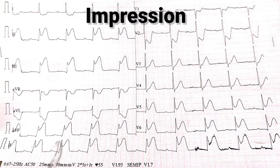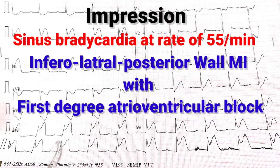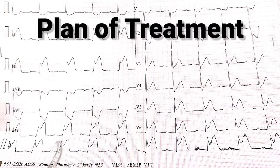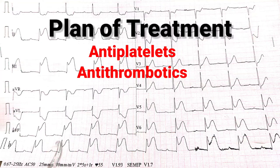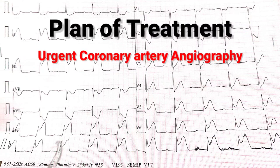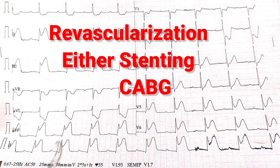My impression and conclusion is sinus bradycardia at a rate of 55 beats per minute in inferolateral posterior wall MI with first-degree atrioventricular block. The plan of treatment: we should start antiplatelet and antithrombotic medicines, and urgent coronary artery angiography to look for coronary arteries, followed by revascularization either by stenting or coronary artery bypass.